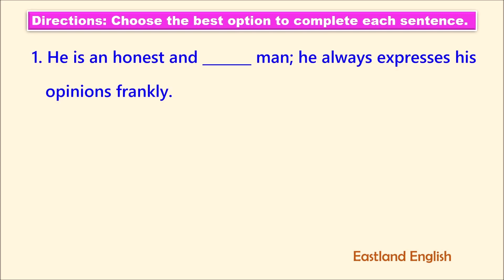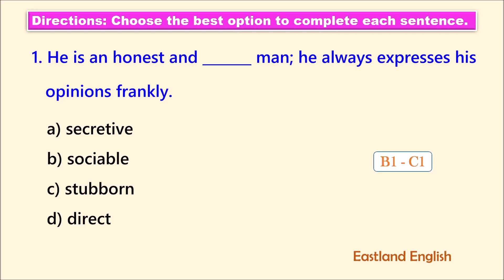Number one. He is an honest and blank man. He always expresses his opinions frankly. Let's look at some clues in the sentence to help us out. Our first clue is the phrase honest followed by and. The conjunction and tells us that we need an adjective relatively equal to the word honest.